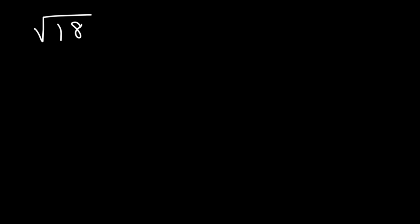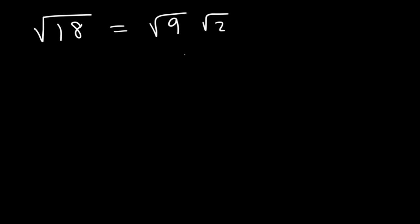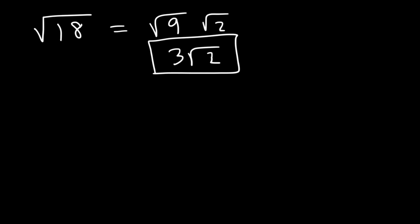Now how can we use this information? Let's say we want to simplify the square root of 18, which is not a perfect square. Break 18 into two numbers, one of which is a perfect square — that's 2 times 9. We know the square root of 9, so write it as square root of 9 times square root of 2. The square root of 9 is 3, so your answer is 3 root 2.